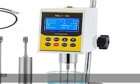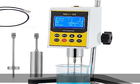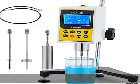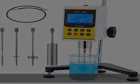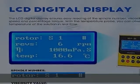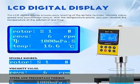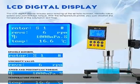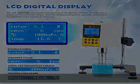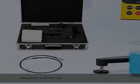High measuring accuracy. Measurement range: 1 MPa·s to 100,000 MPa·s. Note that 1 MPa·s equals 1 cP.